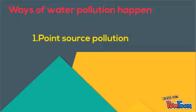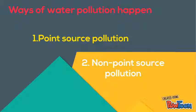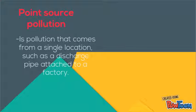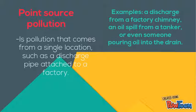There are two ways water pollution happens. The first is point source pollution and the second is non-point source pollution. Point source pollution is pollution that comes from a single location, such as a discharge pipe attached to a factory. Examples include a discharge from a factory chimney, an oil spill from a tanker, or even someone pouring oil into a drain.